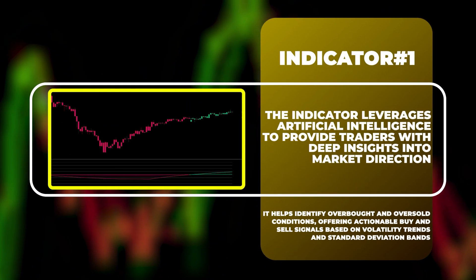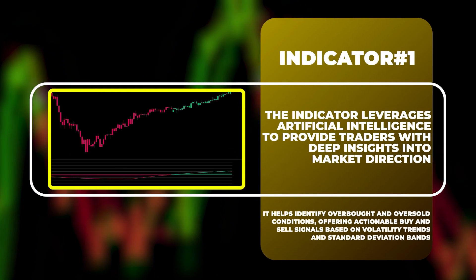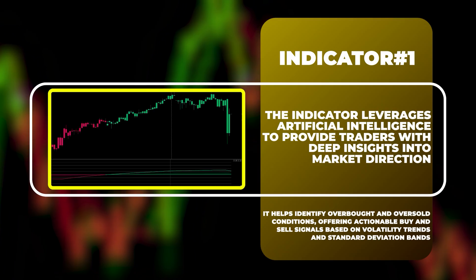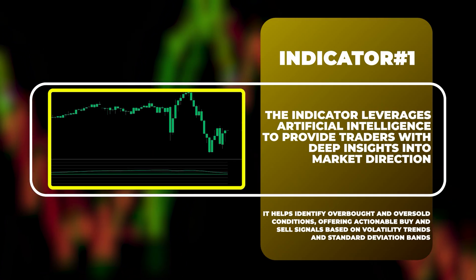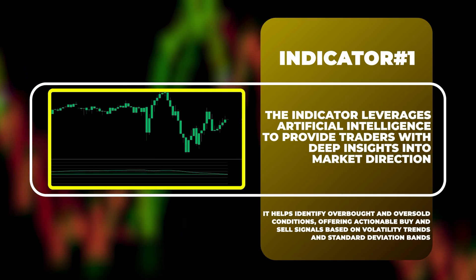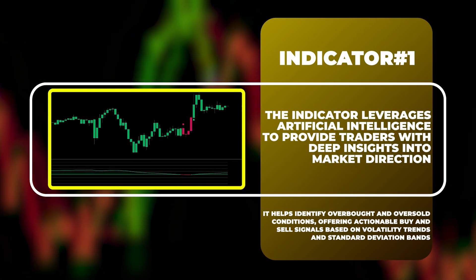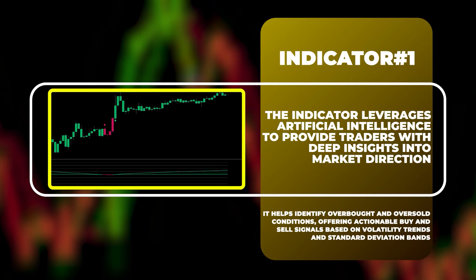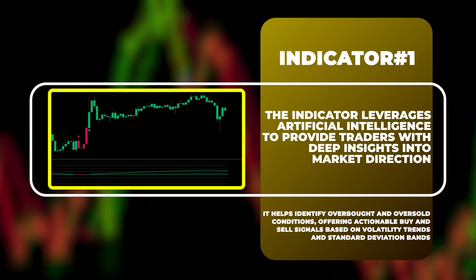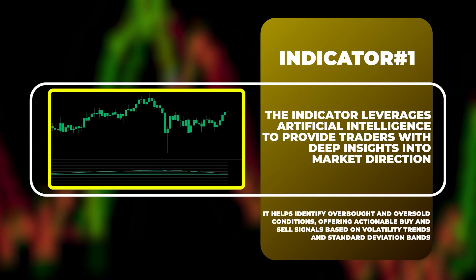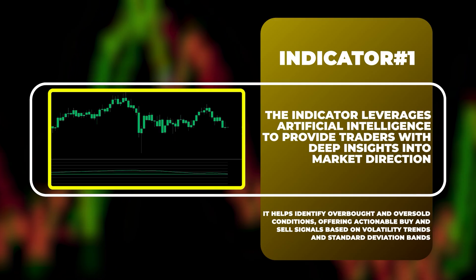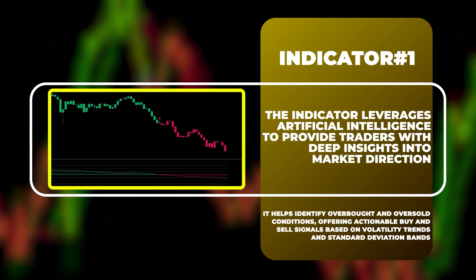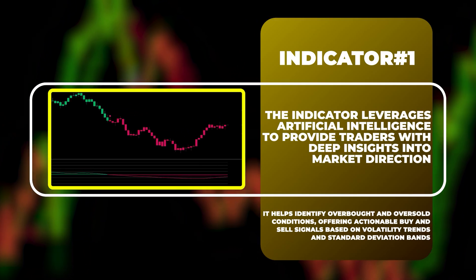The indicator leverages artificial intelligence to provide traders with deep insights into market volatility by measuring the directional strength of price movements. This sophisticated momentum-based tool helps identify overbought and oversold conditions, offering actionable buy and sell signals based on volatility trends and standard deviation bands.